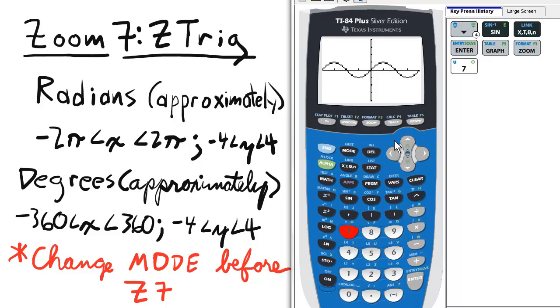Now, the one caveat is that you must change your mode before selecting Z7. So if you want to set your functions in radians, make sure you select radian mode, set your function, and then choose the Zoom 7 Z Trig screen.